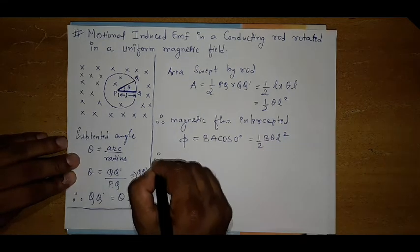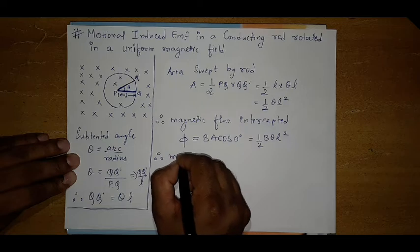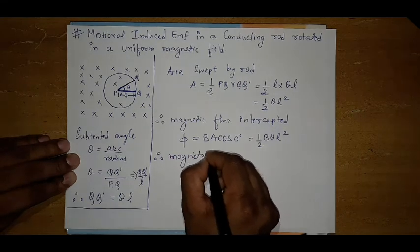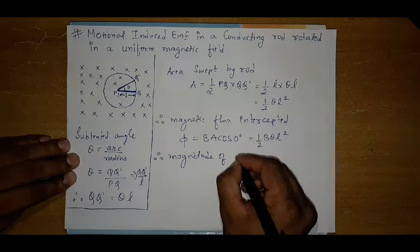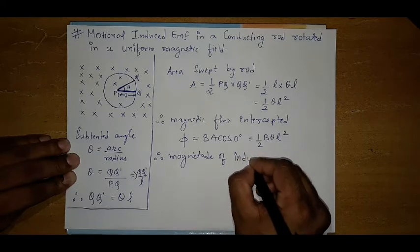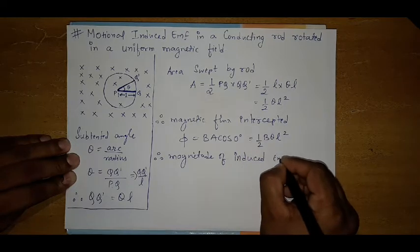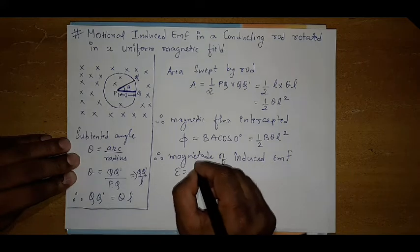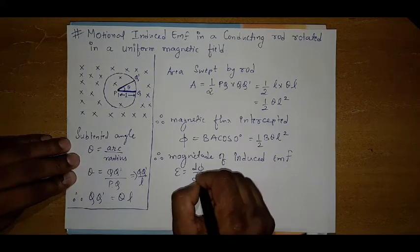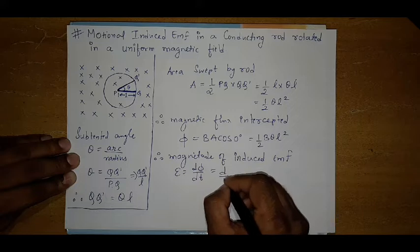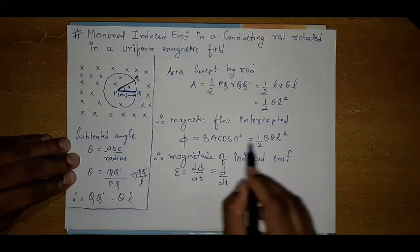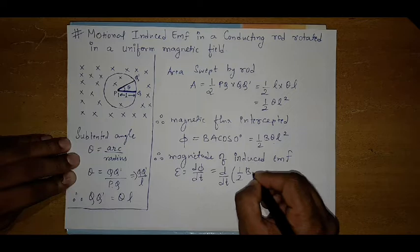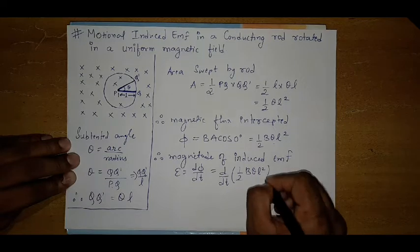Therefore, magnitude of induced EMF: epsilon is equal to d phi by dt, which is equal to d by dt. What is phi? Phi value is half into B into theta into L square.